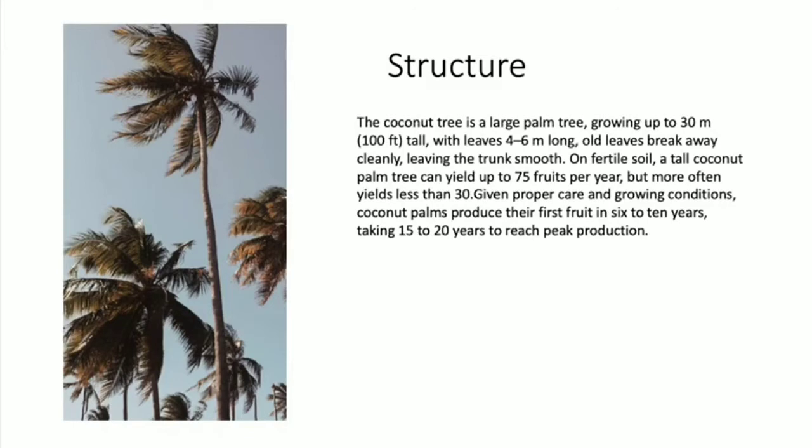Now the structure: a coconut tree is a large palm tree growing up to 30 meters, or 100 feet tall, with leaves that are four to six meters long. Old leaves break away cleanly, leaving the trunk smooth. On fertile soil, a tall coconut palm tree can yield up to 75 fruits per year, but more often yields less than 30.